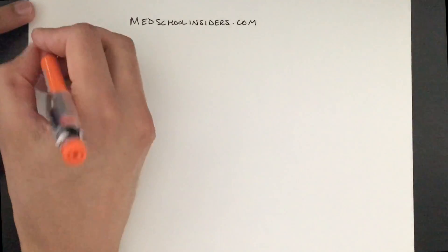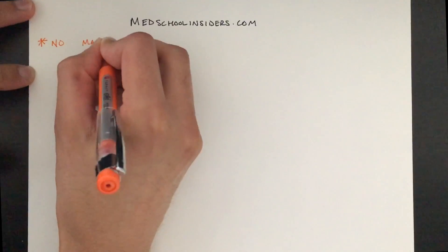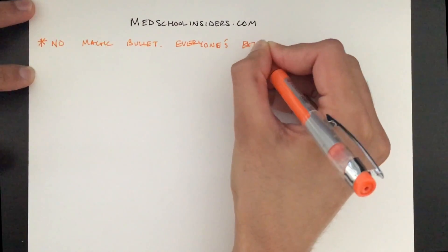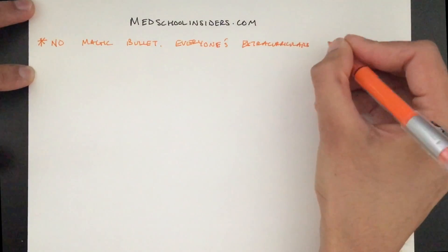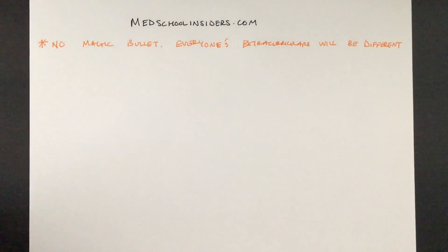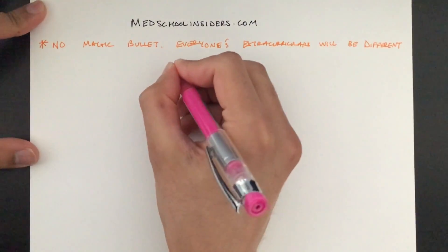But first, before we get into the nitty gritty, realize that there is no magic bullet. Each person is going to pursue different extracurriculars based on their own interests, strengths, and weaknesses. That being said, I'm going to go over a few things that you should keep in mind and try to incorporate into your free time.